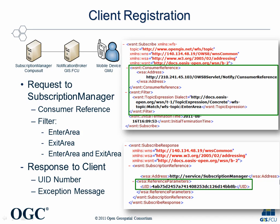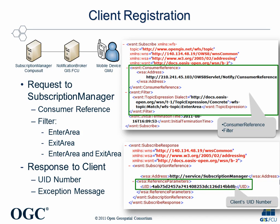After the registration request is sent, the broker will send the consumer reference and filter to the subscription manager. Meanwhile, the broker will create a UID number and send the response back to the client, letting the client know if their registration is successful.